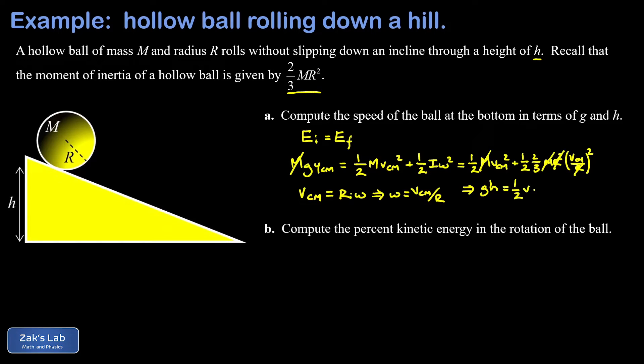And on the right-hand side, a one-half v center of mass squared resulting from the translational kinetic energy term. And if I clean up these factors of 2 in the rotational term, I have a one-third v center of mass squared. So I have one-half v squared and one-third v squared. That's three-sixths plus two-sixths, in other words, five-sixths v center of mass squared. Finally, we can solve for v center of mass by multiplying both sides by six-fifths and taking the square root. This gives us v center of mass is the square root of six gh divided by five.